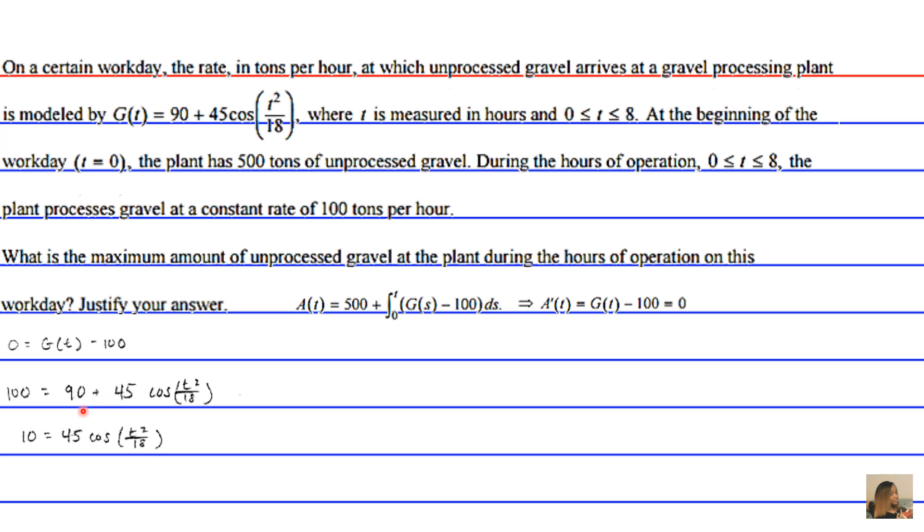When we simplify by subtracting 90 on both sides, and then divide both sides by 45 to get 2/9, and then take the inverse cosine of both sides, multiply by 18, and then take the square root—I'm speaking and jumbling a bunch of steps together just for time's sake—when you do all that, you get that t = 4.923, almost five seconds.